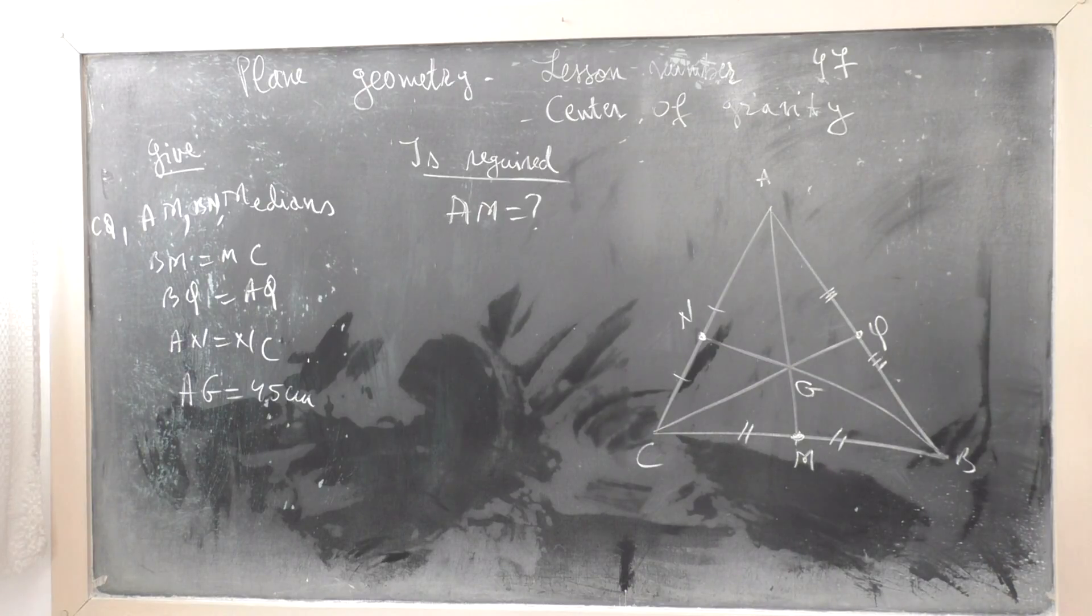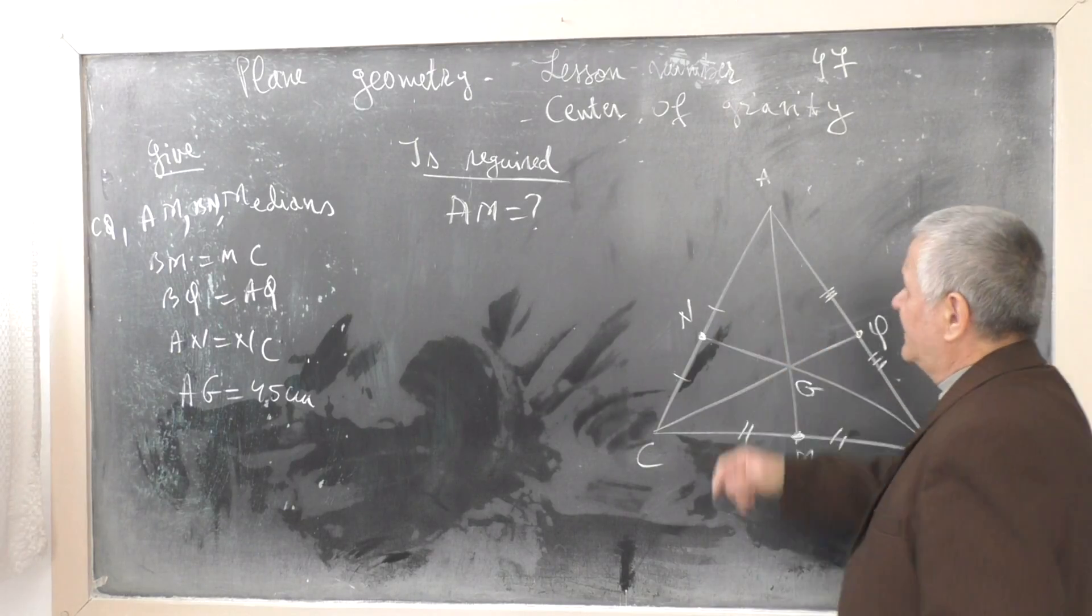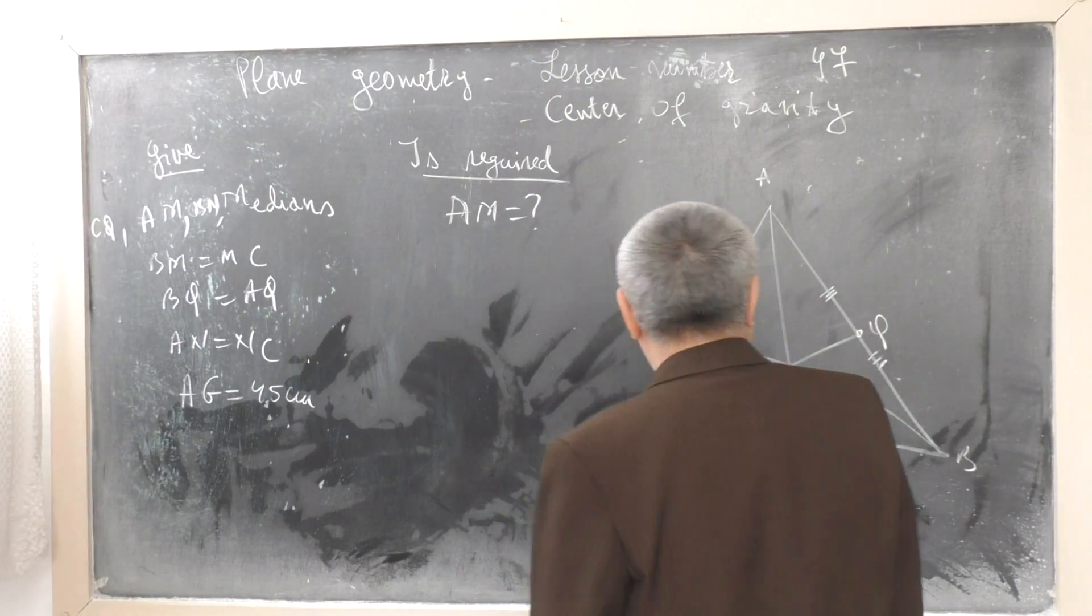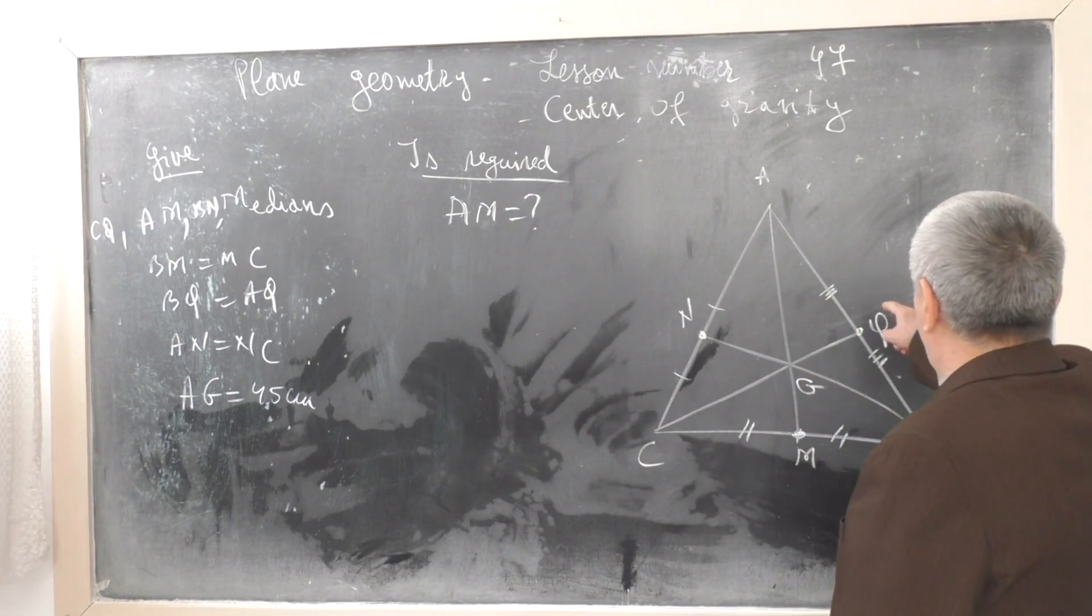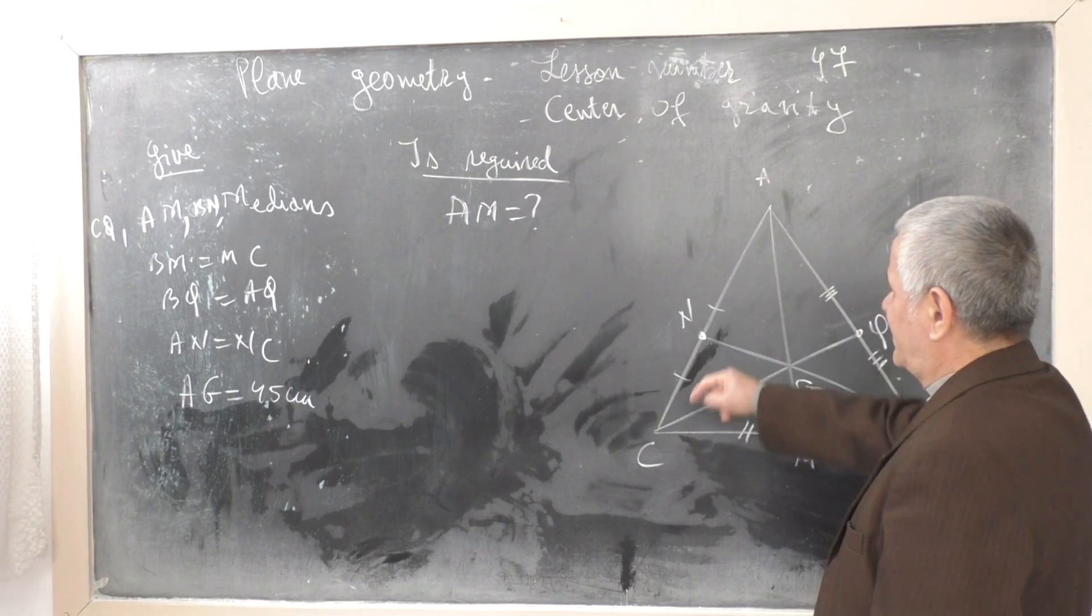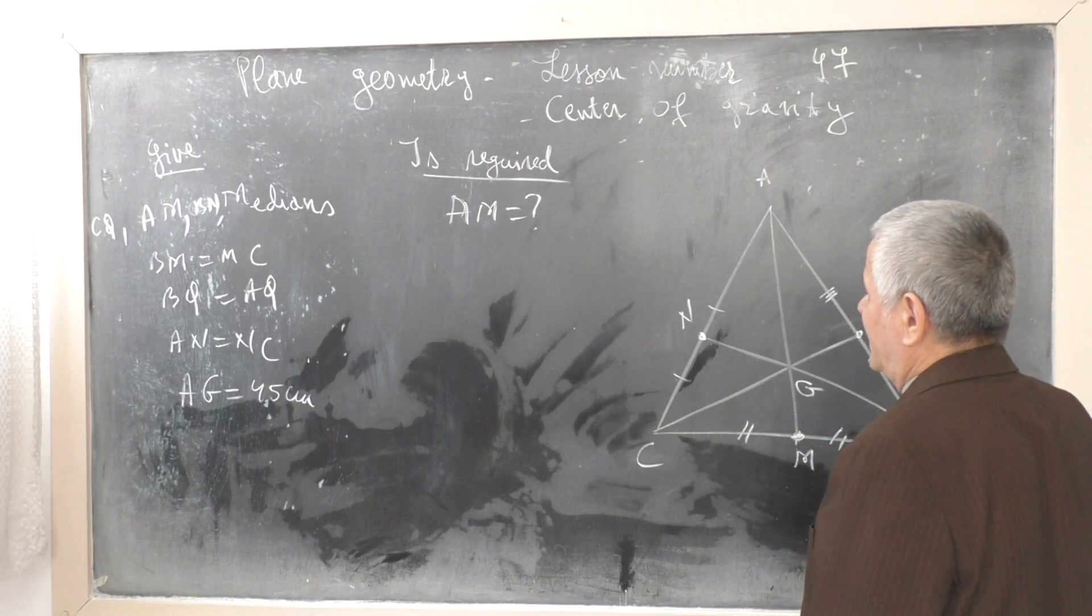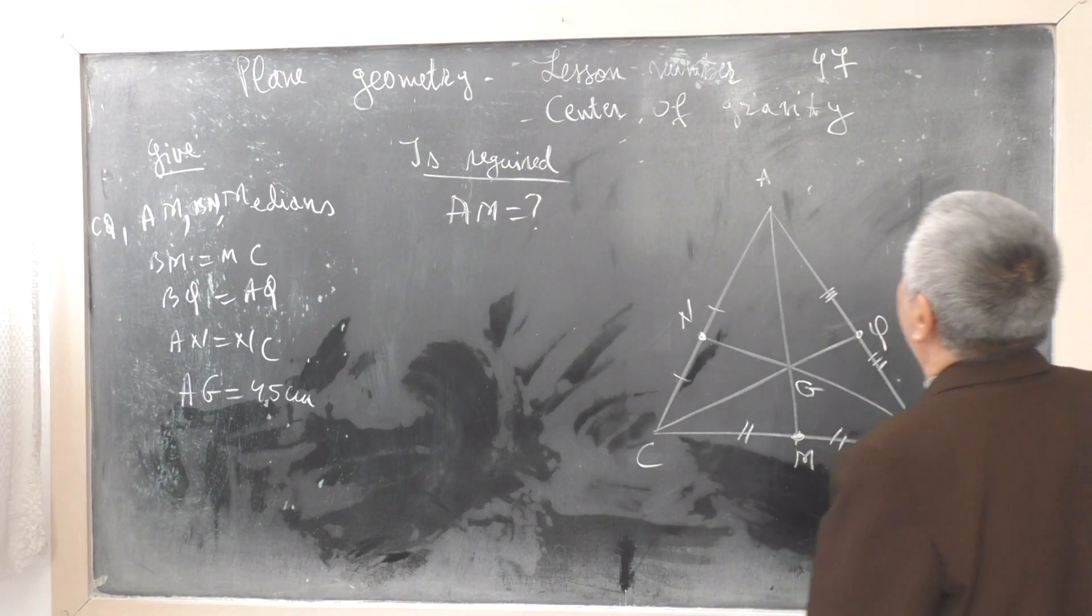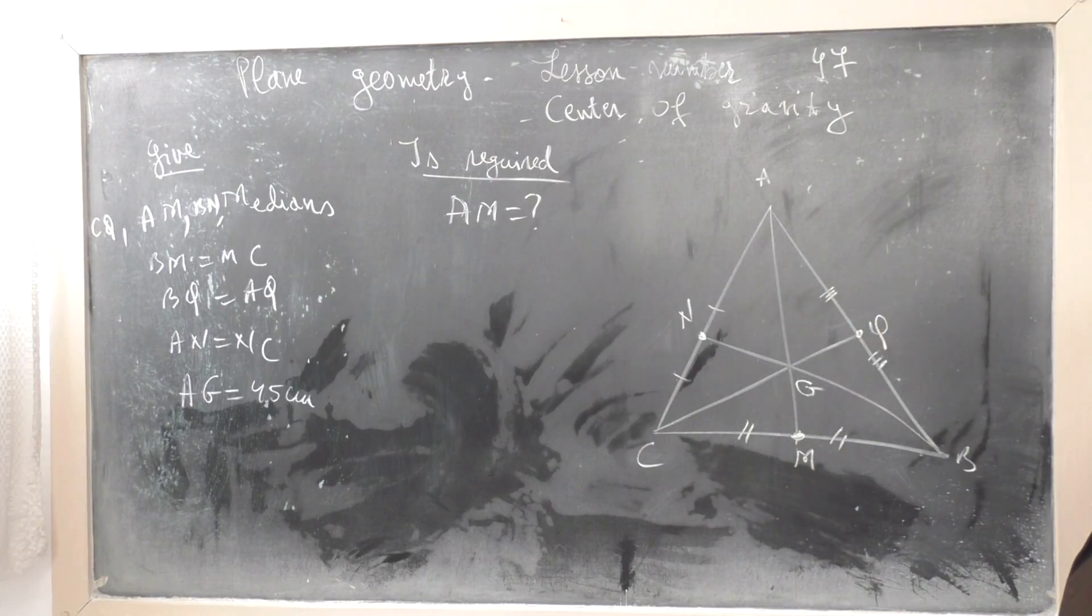Given triangle ABC with medians. BM equals MC, BQ equals AQ, AN equals NC. Point G is the center of gravity, the point where the medians intercept.